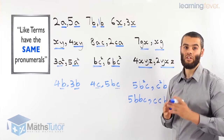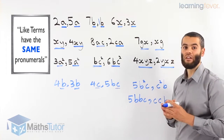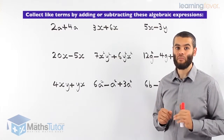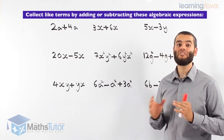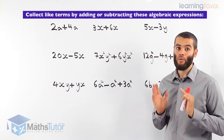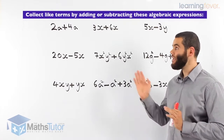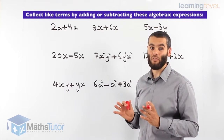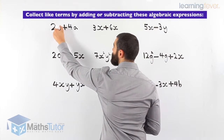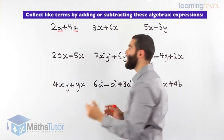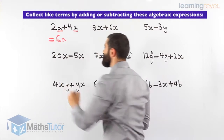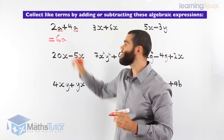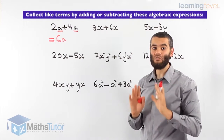Now we can show some examples of addition and subtraction of like terms in algebra. When we are asked to collect like terms, it means add and subtract the like terms only. Remember, the rule is we can only add or subtract like terms. First example: 2a plus 4a. Do they have the same pronumerals? a and a — yes. 2a plus 4a equals 6a. It's like saying 2 apples plus 4 apples gives 6 apples.